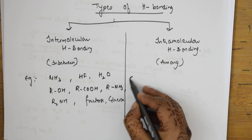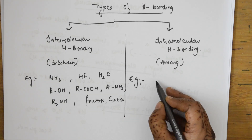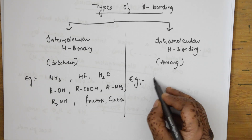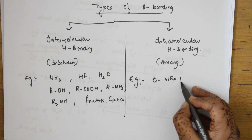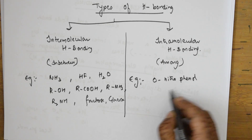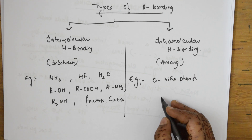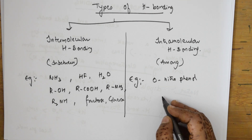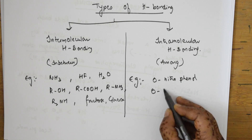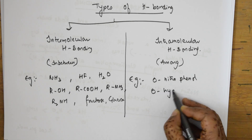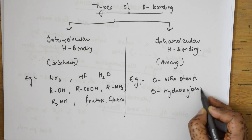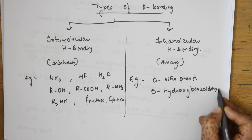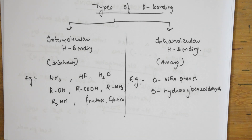For intramolecular hydrogen bonding, there is a famous NCERT example: orthonitrophenol is one example, paranitrophenol and orthohydroxybenzaldehyde are also examples.